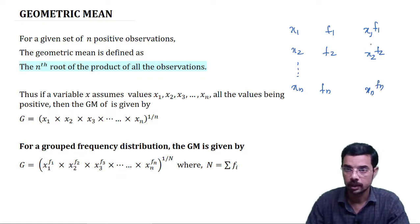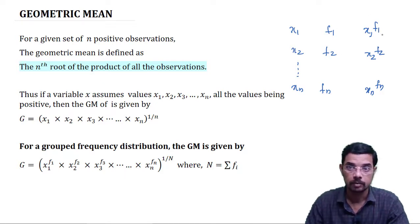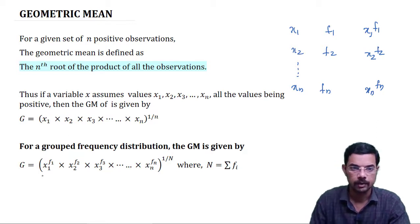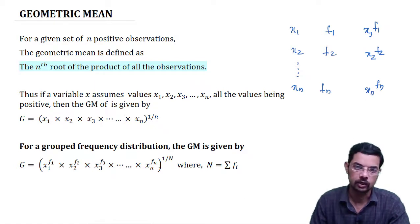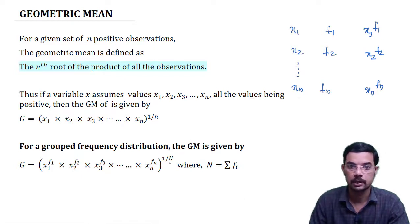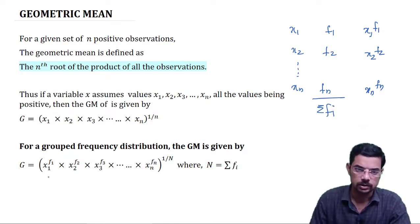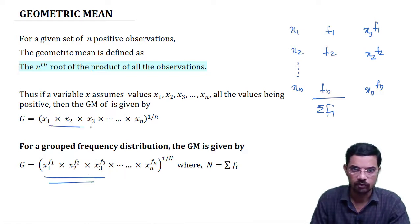We need to multiply all of them together — x1 raised to f1, x2 raised to f2, then xn raised to fn — and raise the result to 1 over capital N, where the total number of observations N equals sigma f. This is the formula for grouped observations.